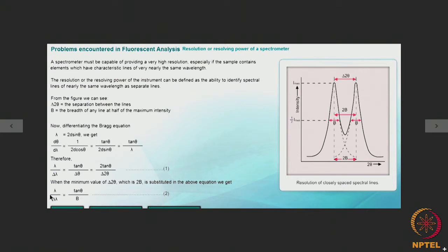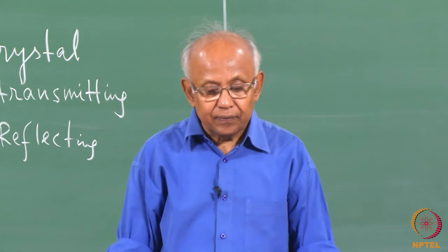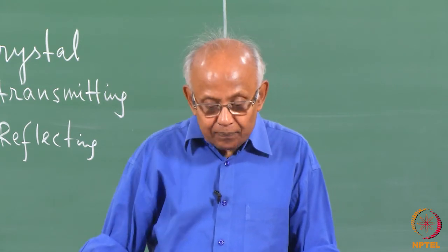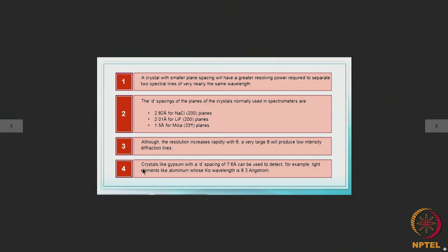Here λ is the average value of the two nearby characteristic wavelengths, and Δλ is their difference. The resolution of an X-ray fluorescence spectrometer will become higher when θ becomes larger, and also when B decreases. If we use a crystal with smaller plane spacing d, smaller d means higher θ and therefore greater resolving power, which helps to separate two spectral lines of very nearly the same wavelength.